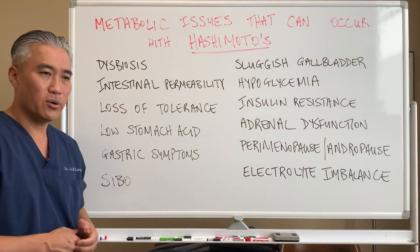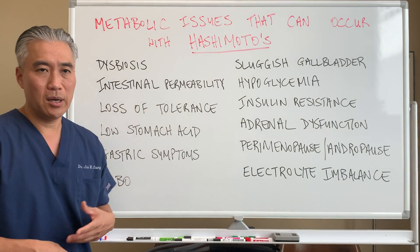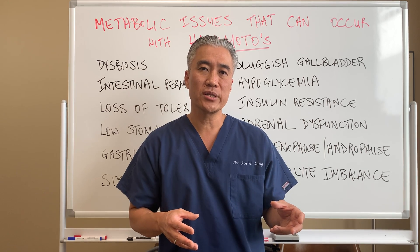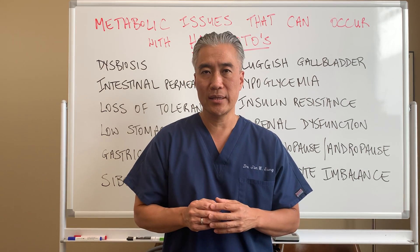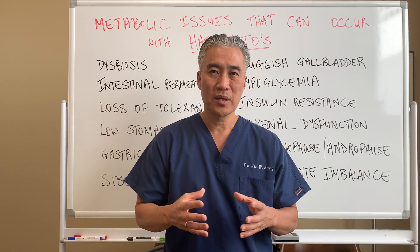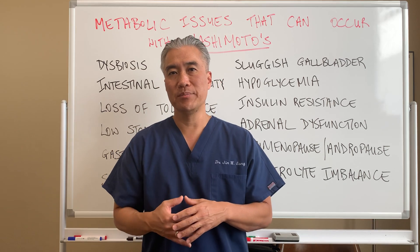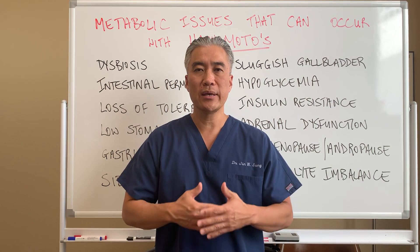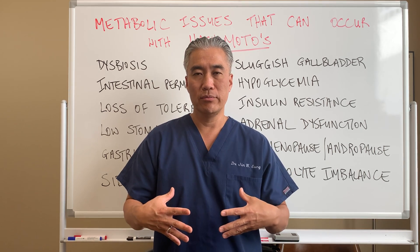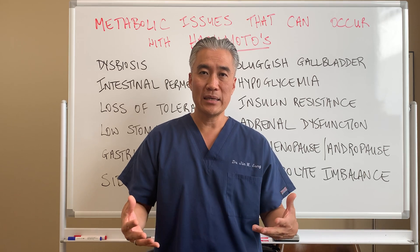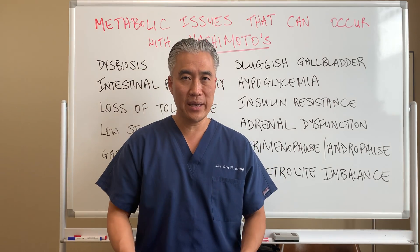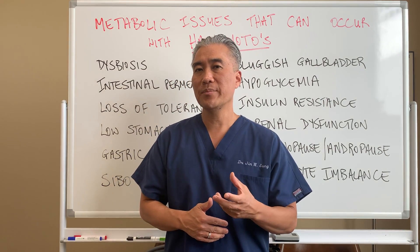Another condition is SIBO — small intestinal bacterial overgrowth. This is when bacteria from the large intestine sneak into the small intestine where they shouldn't be, creating more gases and bloating. A typical example is a female patient who says: I wake up in the morning and my stomach is flat, but as I eat, my stomach starts to bloat — it gets bigger and bigger — and by evening I feel like I'm four or five months pregnant and can't zip up my pants. This is a very common presentation of SIBO.